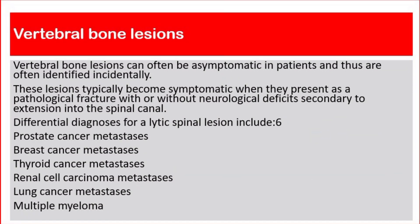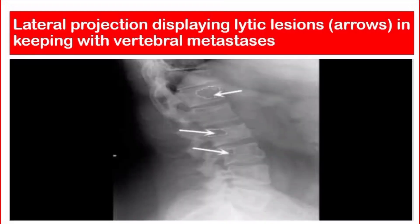Vertebral bone lesions can often be asymptomatic in patients and are often identified incidentally. These lesions typically become symptomatic when they present as a pathological fracture with or without neurological deficits secondary to extension into the spinal cord. Differential diagnosis for lytic spinal lesions include: prostate cancer metastasis, breast cancer metastasis, thyroid cancer metastasis, renal cell carcinoma metastasis, lung cancer metastasis, and multiple myeloma. This picture is a lateral projection displaying lytic lesions in keeping with vertebral metastasis.